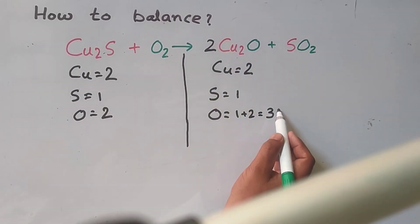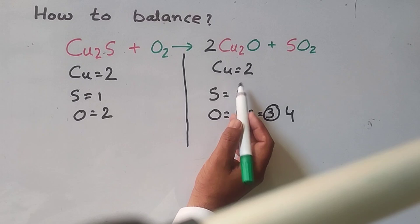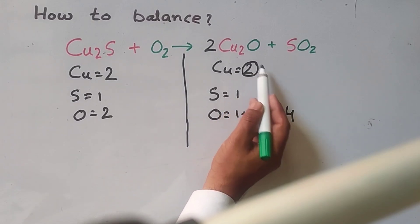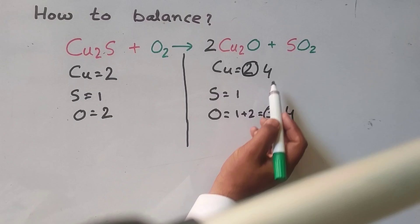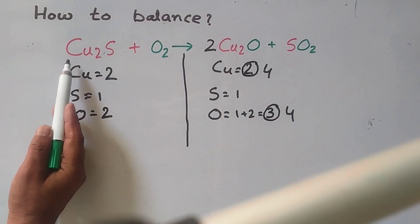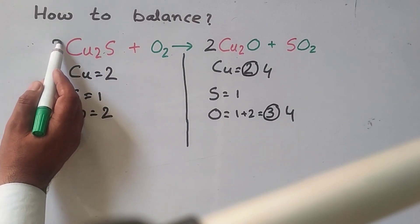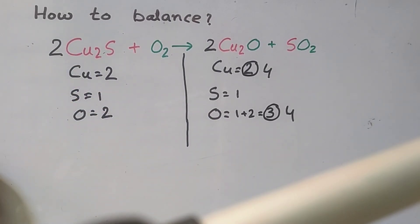Now the oxygen changed to 4, so copper atoms change to 4. Here, 2 copper atoms, so we will add 2 to copper atoms.